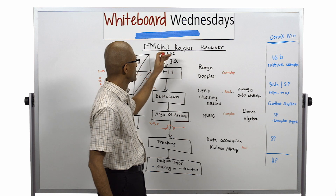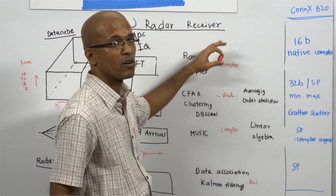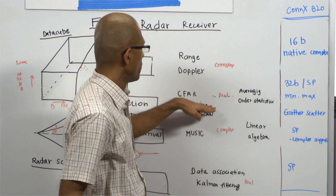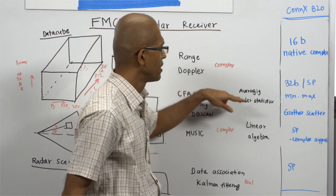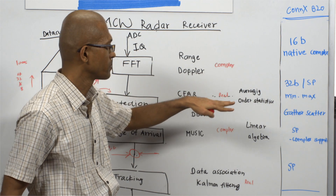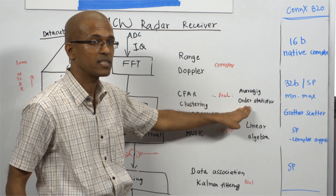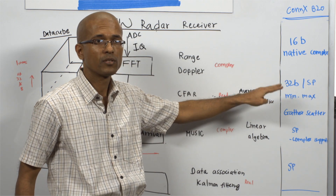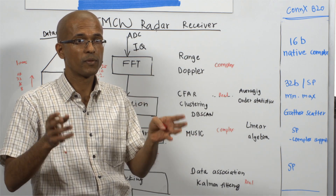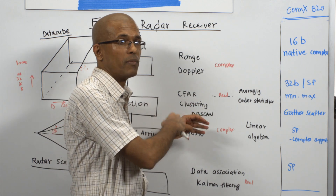To process the complex data received from the ADCs, Connex B20 has 16-bit native complex support, which really accelerates the processing of complex fixed-point data. In CFAR processing, where the signal power requires high precision, 32-bit or single-precision data processing is helpful. There are two most popular CFAR algorithms: cell-averaging CFAR and order statistics CFAR. The order statistics variant is usually processed using min-max instructions, and the B20 DSP can process min-max and averaging operations in parallel across different slots, giving higher throughput and much better performance.